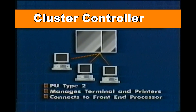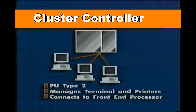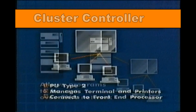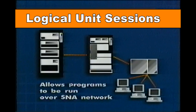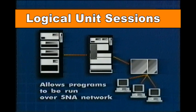Type 2 devices are cluster controllers that manage terminals and printers and allow you to consolidate communications lines. They're usually located with your users near their terminals. Logical units, on the other hand, define sessions over physical units and can be used for things like advanced program-to-program communications, as well as traditional terminal sessions and file transfers.